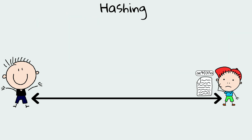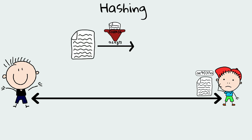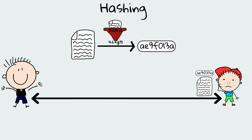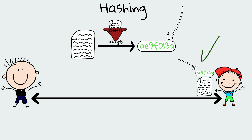When Joe receives JP's message, he will apply the same hash function to the message. Then he compares the computed hash with the received hash. If both match, it indicates that the data has not been altered by a malicious Chatty.